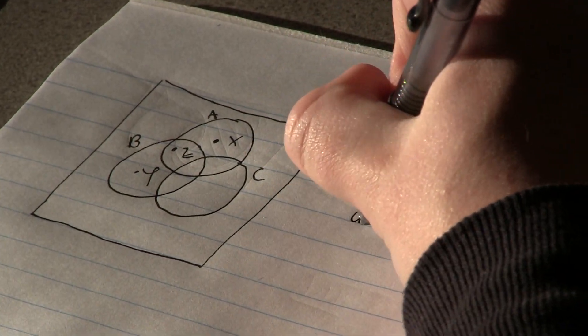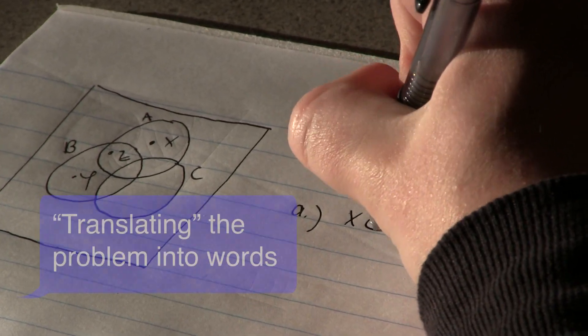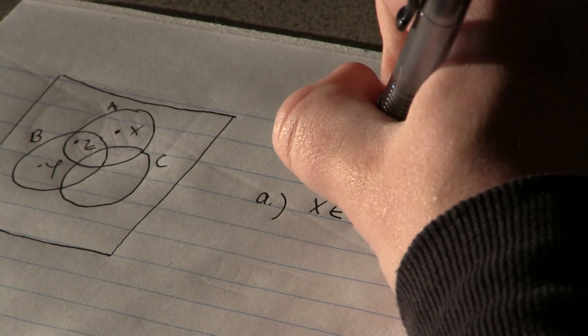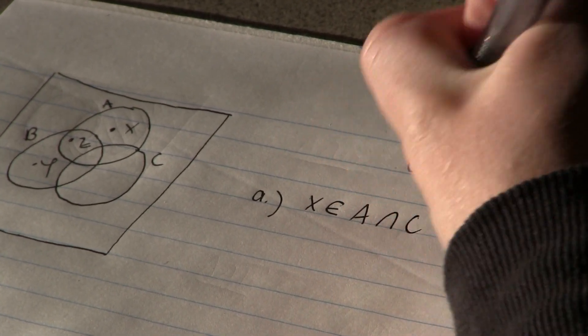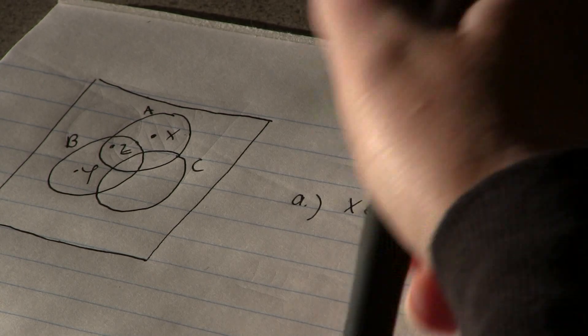Okay, so statement one is that X is an element or lives in—that's what they told me to think of that as—X lives in A intersect C. Let's see if it satisfies both of the conditions because this is intersection. I'm looking over here. X lives in A, so that part's okay.